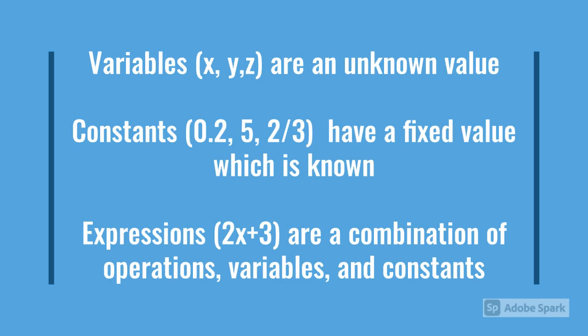Summary. Variables are an unknown value. Constants have a fixed value which is known. Expressions are a combination of operations, variables and constants which can be simplified.